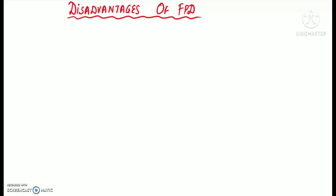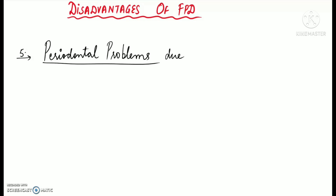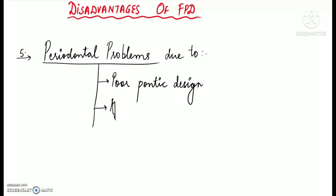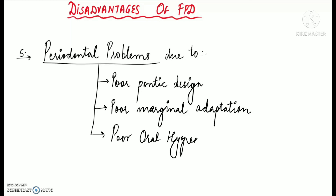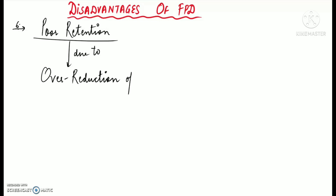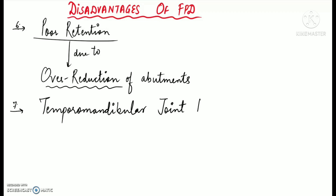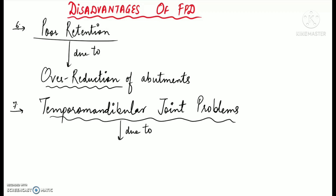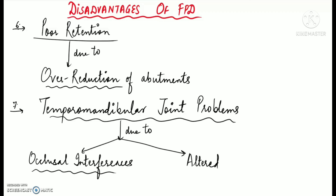Periodontal problems can arise due to poor contact design, poor marginal adaptation, or poor oral hygiene maintained by the patient. Poor retention of the prosthesis can also occur due to over-reduction of the abutments. Furthermore, TMJ problems can arise due to failure to eliminate occlusal interferences or due to an altered vertical dimension which leads to occlusal problems.